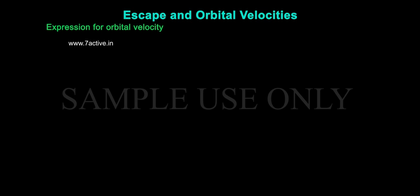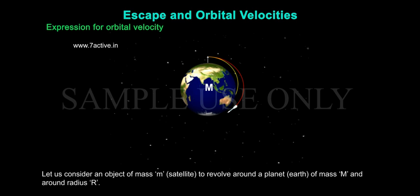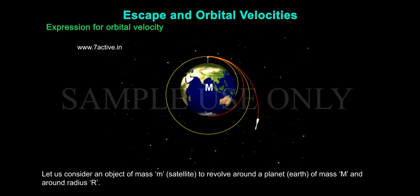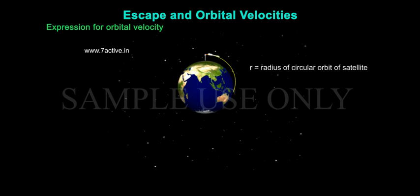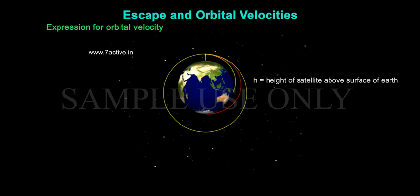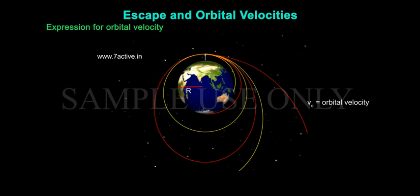Expression for Orbital Velocity: Let us consider an object of mass m (satellite) revolving around a planet Earth of mass M and radius R. Here, m is the mass of the satellite, R is the radius of the circular orbit of the satellite, H is the height of the satellite above the surface, R is the radius of Earth, V0 is the orbital velocity, and M is the mass of the Earth.